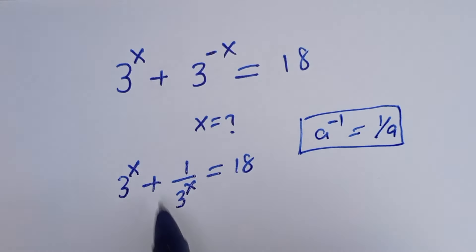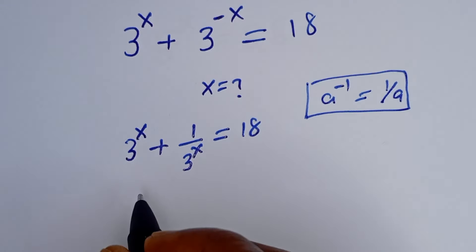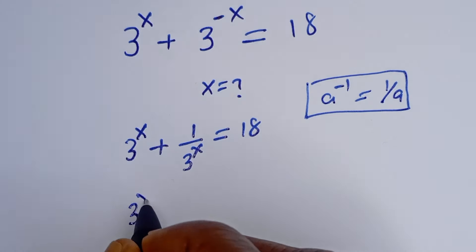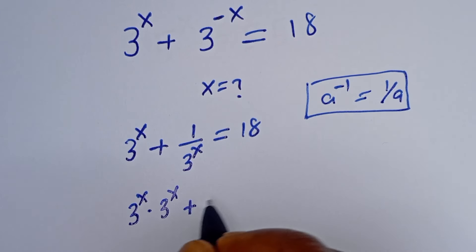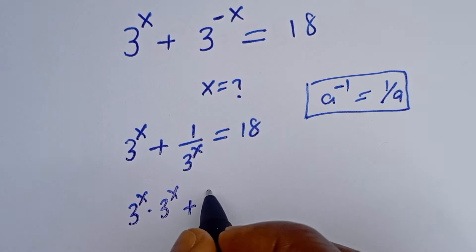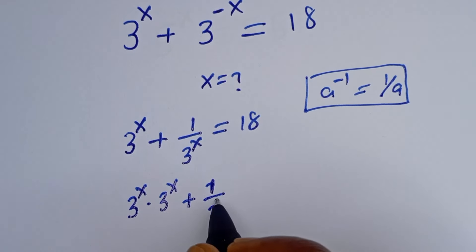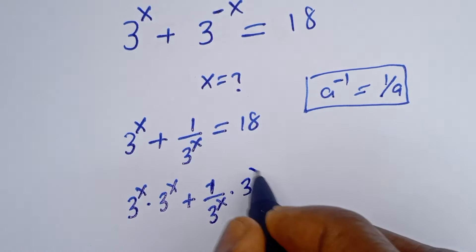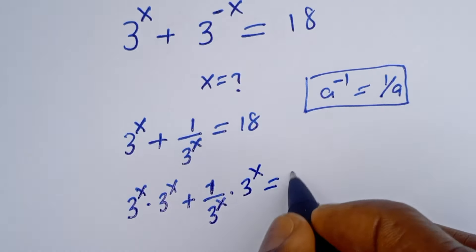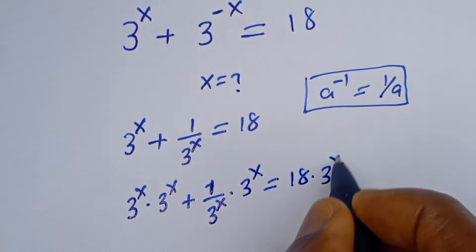From here, let's multiply both sides of the equation by 3 to the power of s. That is, 3 to the power of s multiplied by 3 to the power of s plus 1 divided by 3 to the power of s, multiplied by 3 to the power of s, is equal to 18 multiplied by 3 to the power of s.